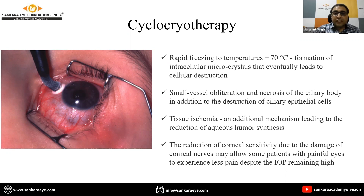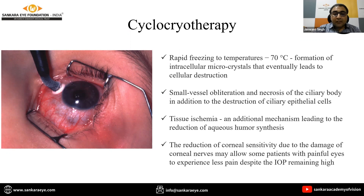The resultant tissue ischemia acts as an additional mechanism reducing aqueous humor synthesis. Cryotherapy applied close to the cornea can reduce corneal sensitivity due to damage to corneal nerves, which can also be helpful for patients with painful eyes, even if intraocular pressures remain high.